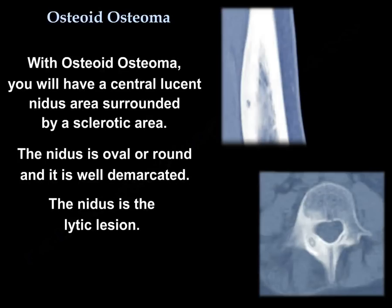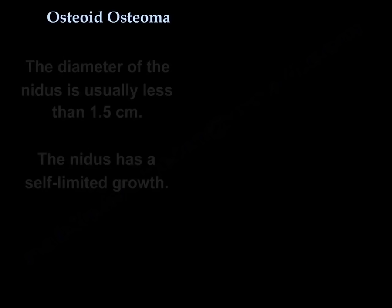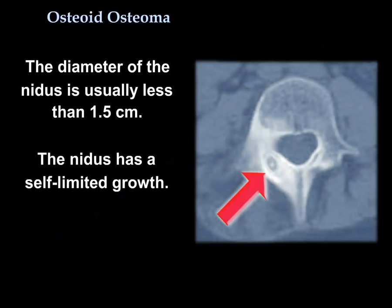With Osteoid Osteoma, you will have a central lucent nidus area surrounded by a sclerotic area. The nidus is oval or round and well demarcated. It is a radiolucent lesion, and the diameter of the nidus is usually less than 1.5 cm.